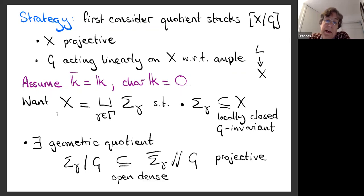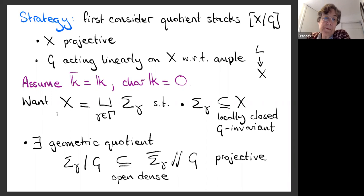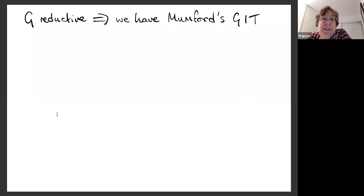We want to stratify the projective variety X as a disjoint union of locally closed G-invariant sub-varieties sigma_gamma such that each has a nice geometric quotient by G. Moreover, we want a projective completion — a GIT-type quotient of some projective completion of sigma_gamma, possibly after blow-ups — with the geometric quotient of the stratum sitting as an open subset in this projective completion. That's the aim: to construct such a stratification.